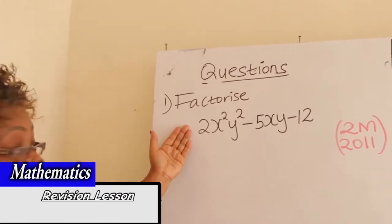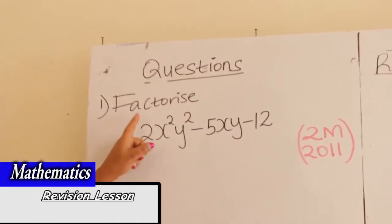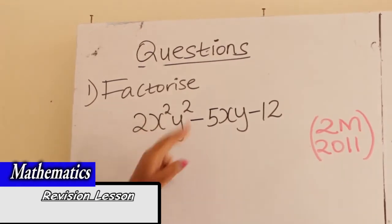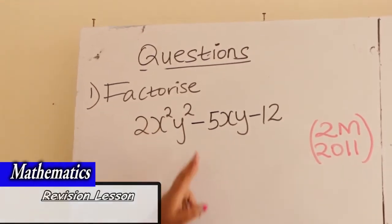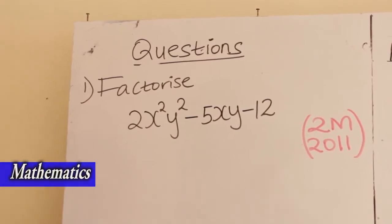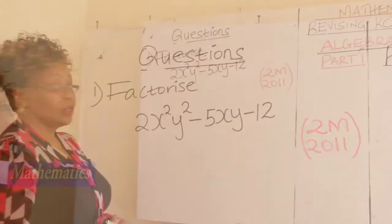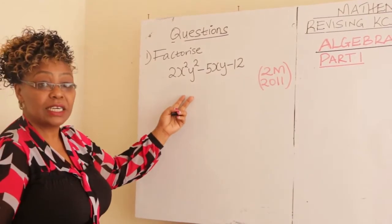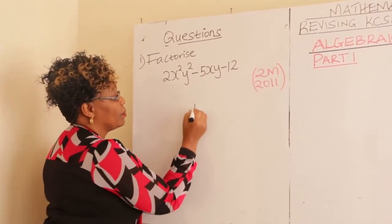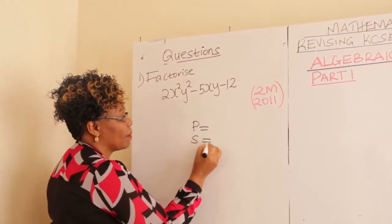Number one, you are told to factorize: 2x squared y squared minus 5xy minus 12. It was carrying two marks in year 2011. So, how do you go about this? You come and say: what is the product, and what is the sum?